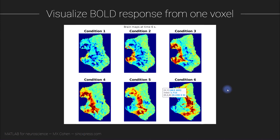In this video we are going to interact with plots, do more data visualization, and that's going to set us up for the statistical analysis in the next video. We're going to use a tool in MATLAB figures called the data cursor tip. Once we activate that tool, it will allow us to click on the plot and get information about that image pixel, which in our case corresponds to an fMRI voxel. I'll show you two ways of how to work with this information in MATLAB.